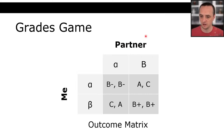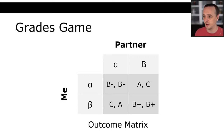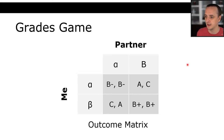This is called a matrix game — the matrix form of a game — because it specifies: if I choose this and they choose this, here's what happens. Rock, paper, scissors could easily be specified as a matrix game. So far we have actions — I can choose alpha or beta — we have strategies, and we have outcomes. But this is not yet a complete game. What's missing is payoffs.